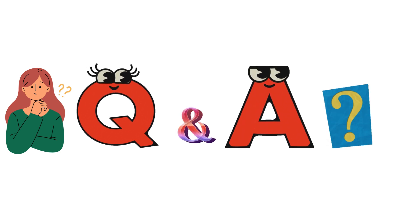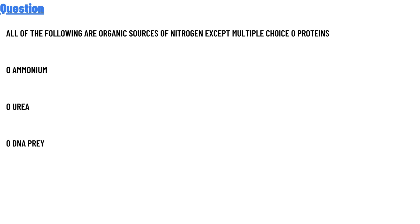So our today's question is: all of the following are organic sources of nitrogen except — multiple choice of proteins, ammonium, urea, or DNA.